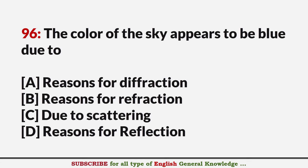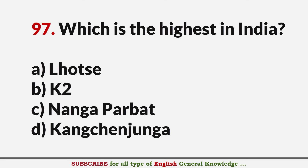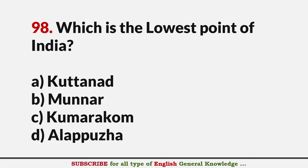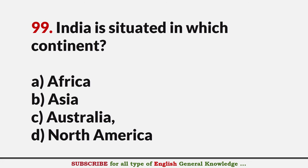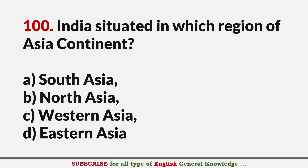The color of the sky appears blue due to? Answer C: Scattering. Which is the highest peak in India? Answer D: Kanchenjunga. India is situated on which continent? Answer D: Asia. India is situated on which region of the Asian continent? Answer A: South Asia.